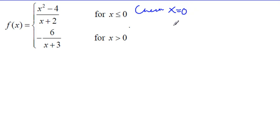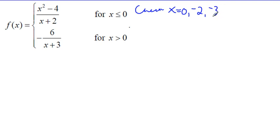There are some other points we need to consider — any place where f of x might be undefined. Generally I look for the denominator equal to zero. So there's a possibility of zero in the denominator, and we might check x equals negative two. If I look at this other piece, there's also a possibility of x equals negative three — I'll put it there and talk about it a little later. So let's do x equals zero first.